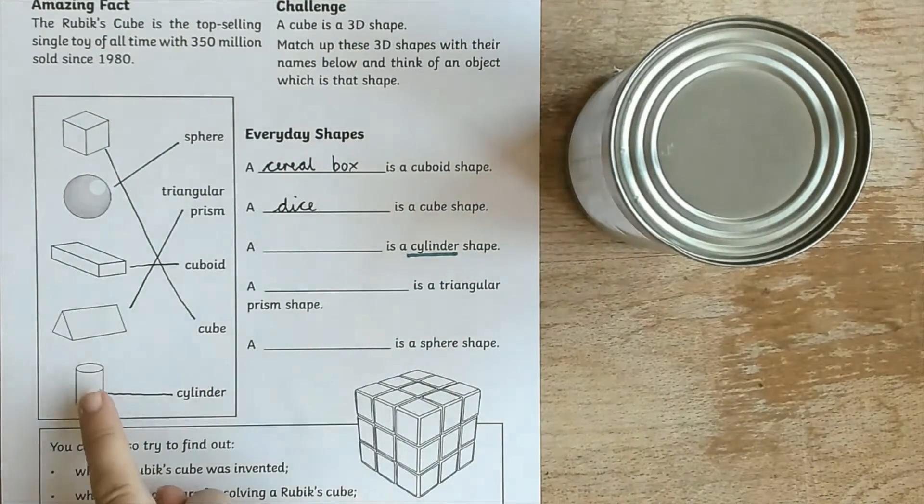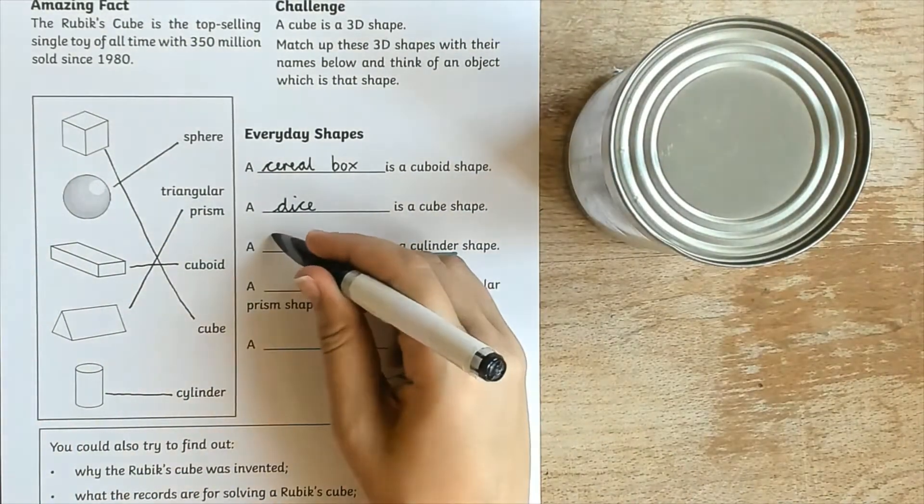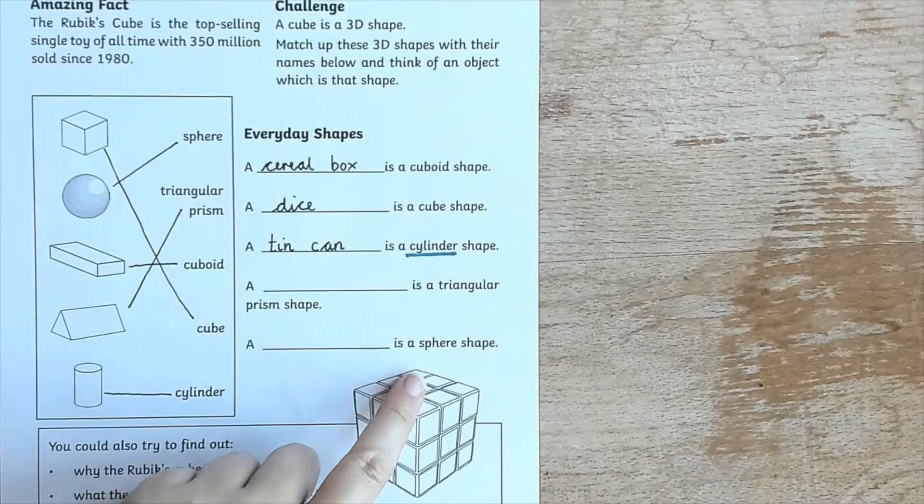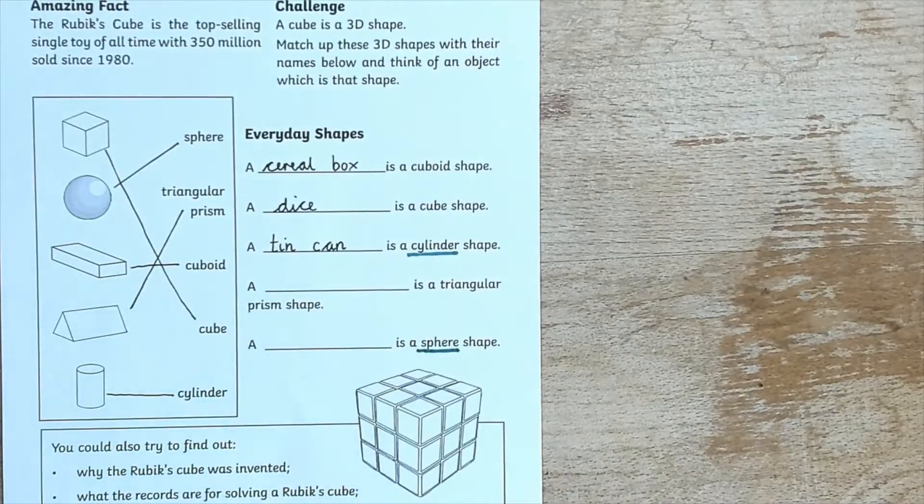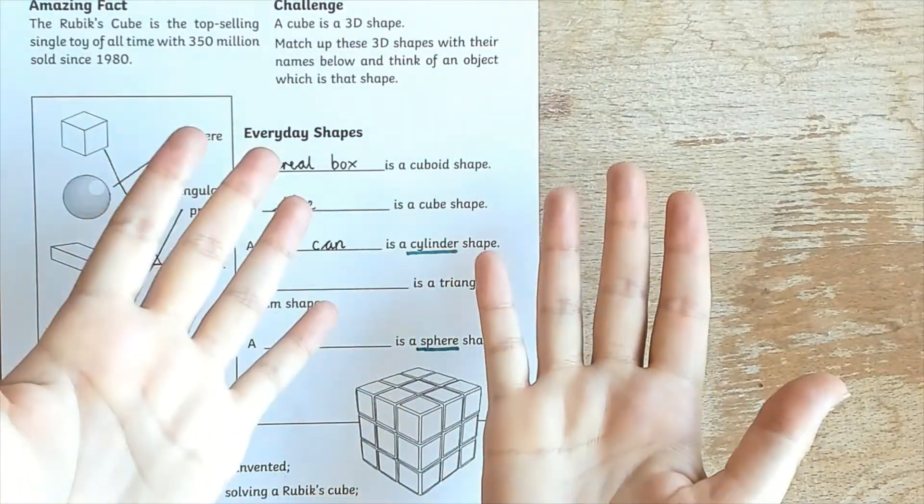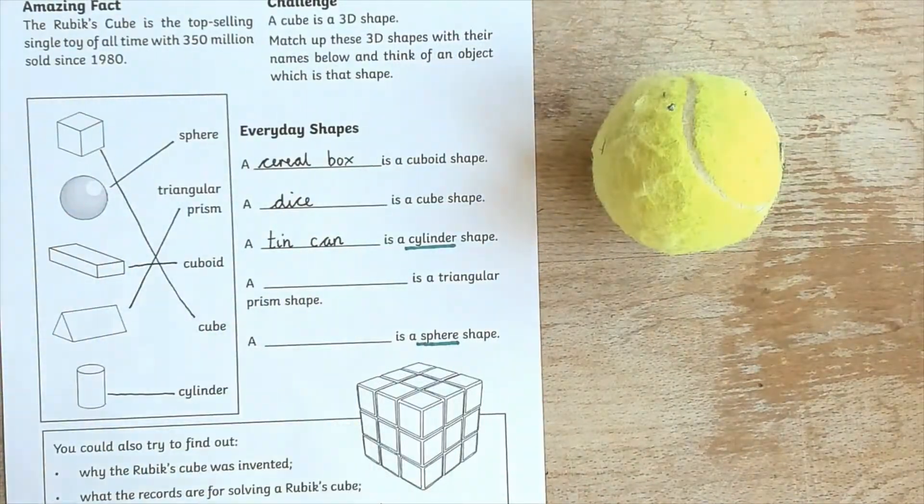This would make a great homework activity or could be used as part of an outdoor shape hunt. How many shapes can they find? Which shapes were easier to find? Did they find more of these shapes inside or outside?